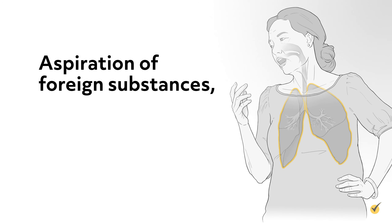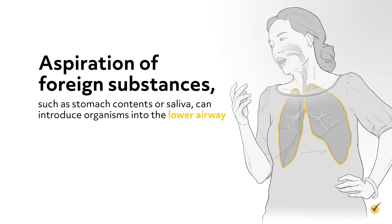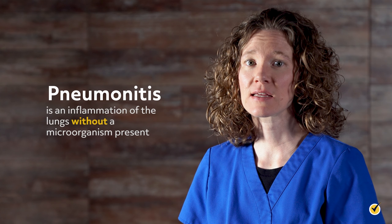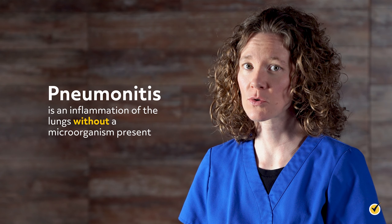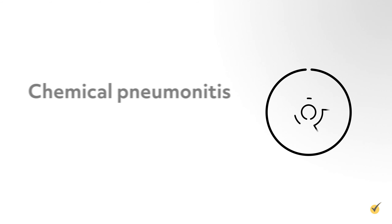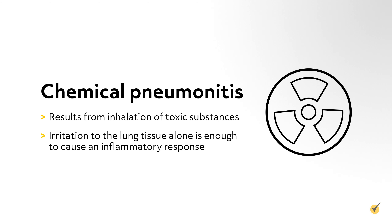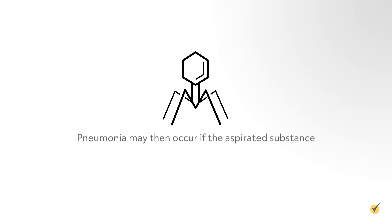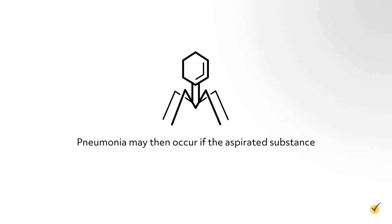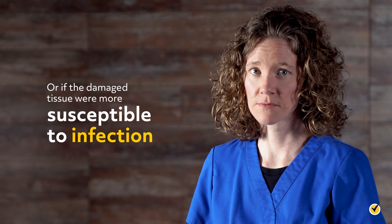Aspiration of foreign substances, such as stomach contents or saliva, can introduce organisms into the lower airway and cause inflammation and infection. Strictly speaking, pneumonitis is an inflammation of the lungs without a microorganism present. Chemical pneumonitis results from inhalation of toxic substances when irritation to the lung tissue alone is enough to cause an inflammatory response. Pneumonia may then occur if the aspirated substance contains pathogens or if the damaged tissue is more susceptible to infection.